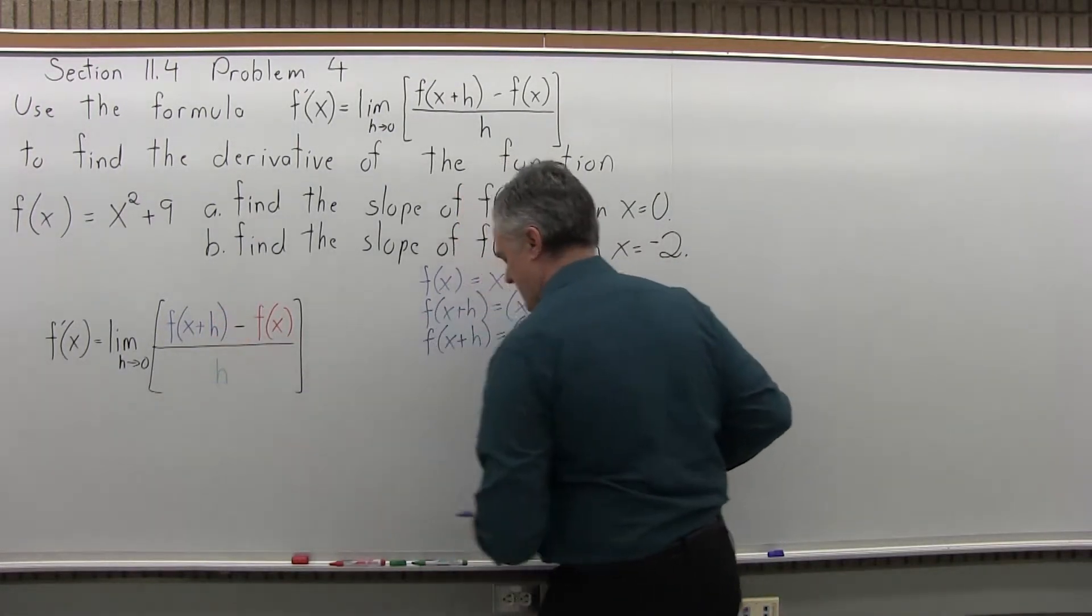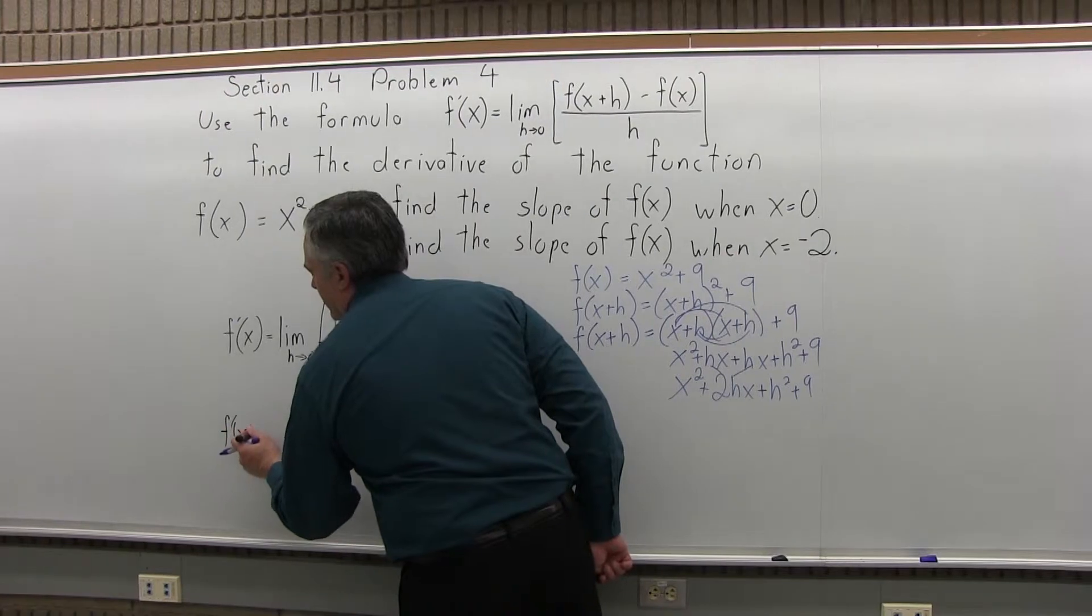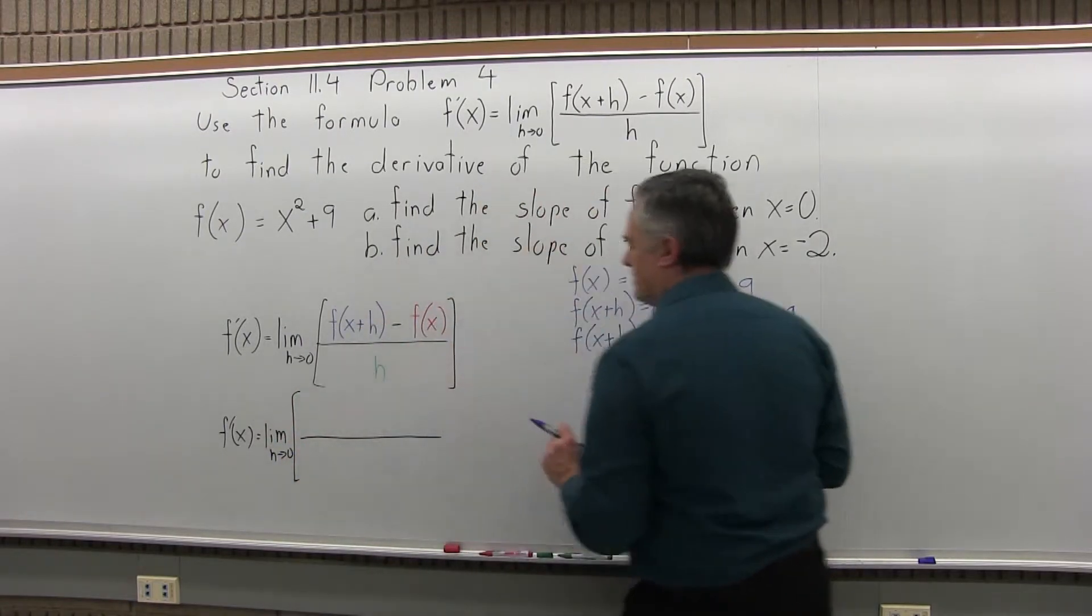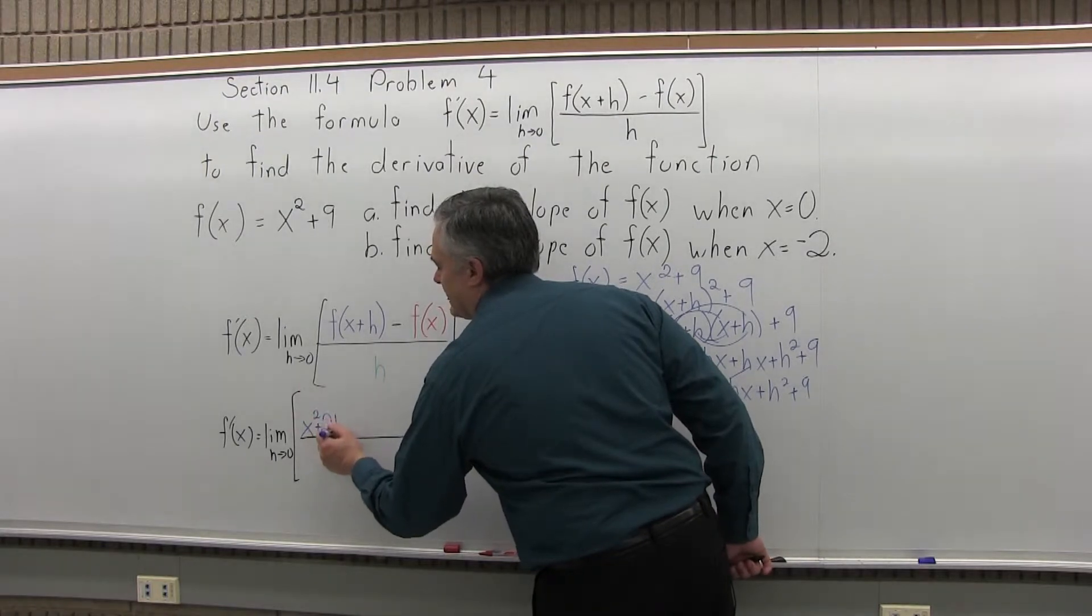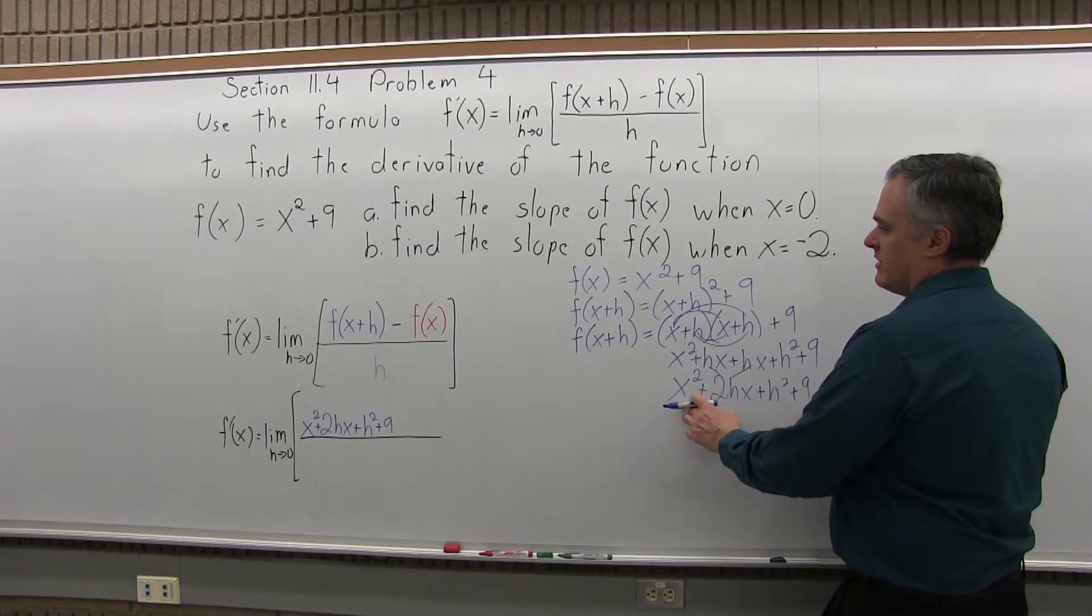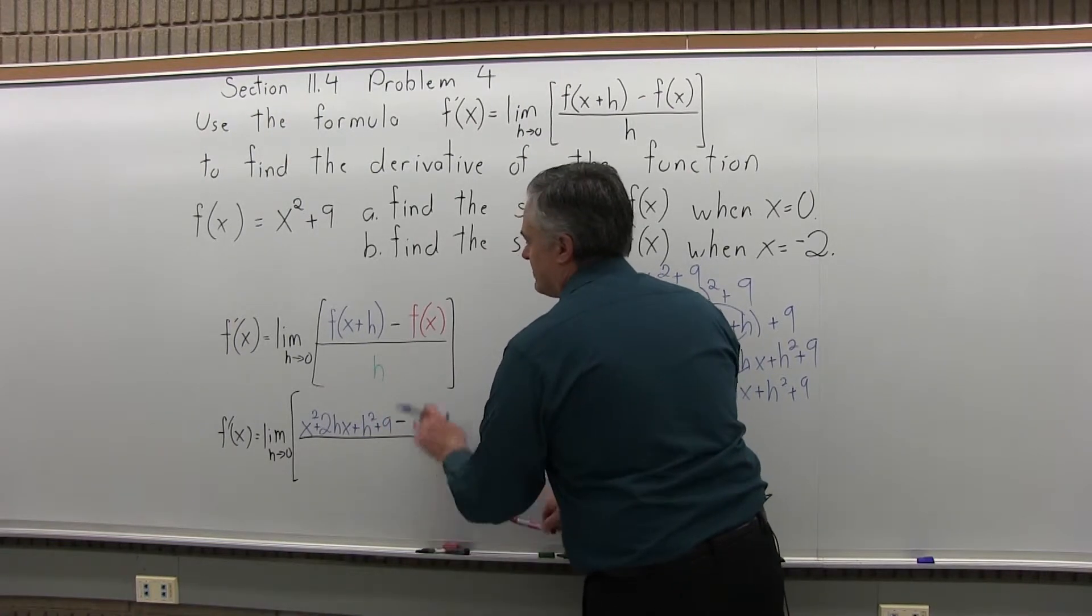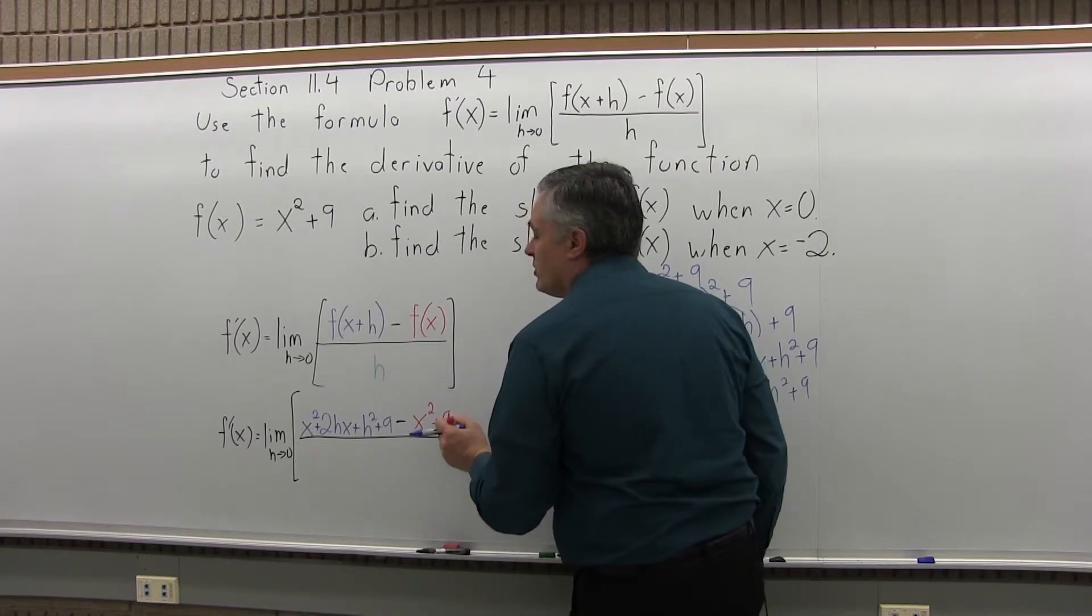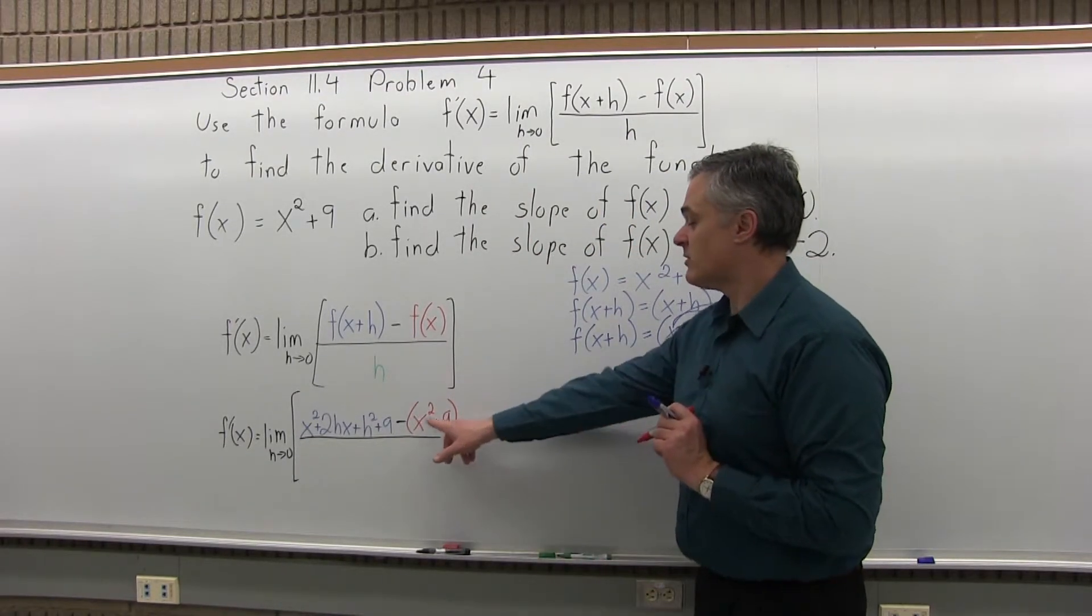As I fill in my formula for the derivative, f'(x) equals the limit as h approaches zero of f(x+h), which I now have a simplified answer for. It is x² + 2hx + h² + 9. That's the answer I got from the blue part of the problem. Next, I have a minus, and then f(x), which I have done in red. f(x) is given as the problem starts. f(x) is x² + 9. When you're subtracting f(x), if you have more than one term, you have to use parentheses.